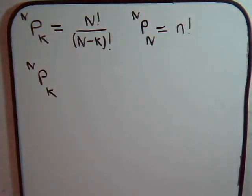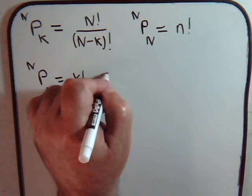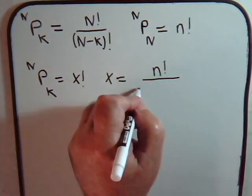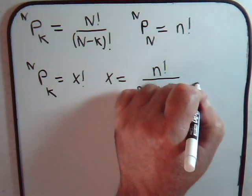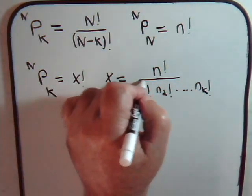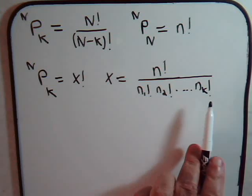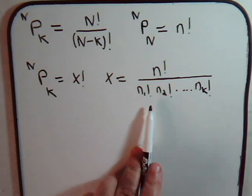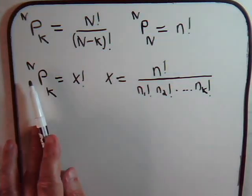Then we learned that in this situation, we just call this n equals x factorial, or x is equal to n factorial divided by... These represent the different types of objects. There are repeat numbers of them. And we get an example that we work with this. And in future videos, we're going to work some more of these type of samples where not all of the objects are unique.